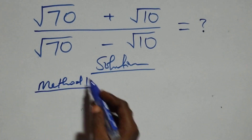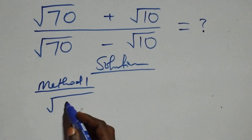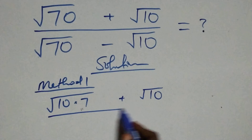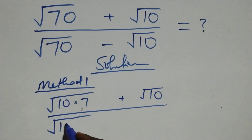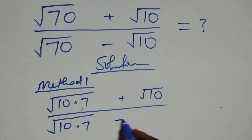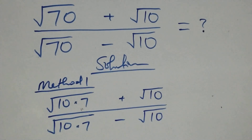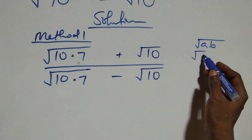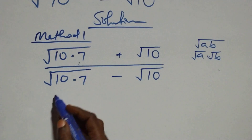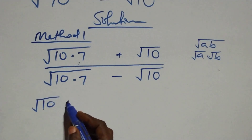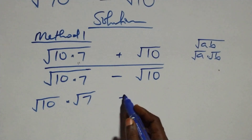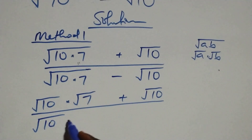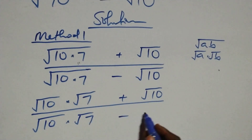What is given can be written as root ten times seven plus root ten, all over root ten times seven minus root ten. We apply the rule that root(a times b) is the same as root a times root b. So we express this as root ten times root seven plus root ten, divided by root ten times root seven minus root ten.